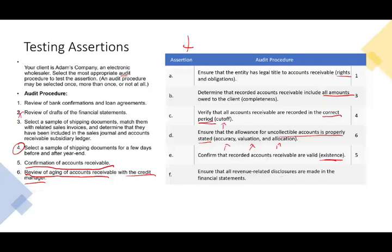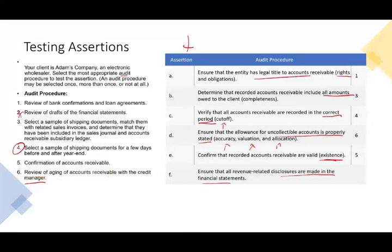Ensure all revenue-related disclosures are made in the financial statements. To test this, you review the draft of the financial statements and read the notes. Based on your knowledge about the company, you want to make sure that all notes reflect everything stated in the numbers and any relevant information that users of the financial statements would need to know — for example, if something is pledged, or if there are any outstanding lawsuits.